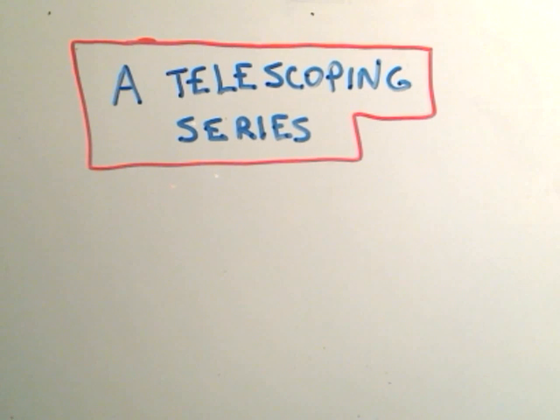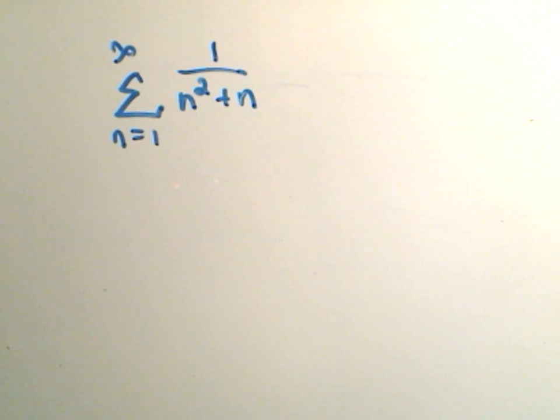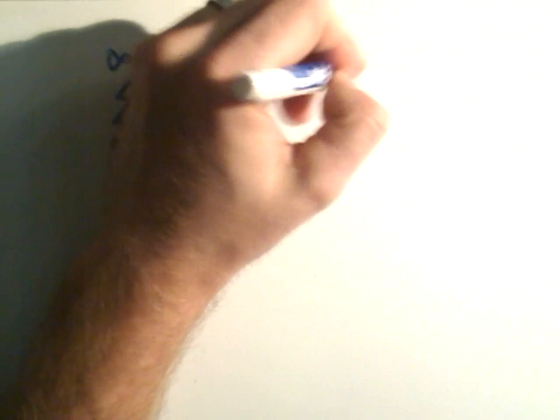Okay, in this video I'm going to talk about a telescoping series. We're going to calculate the series n equals 1 to infinity of 1 over n squared plus n. And we're going to actually find the sum of this series.